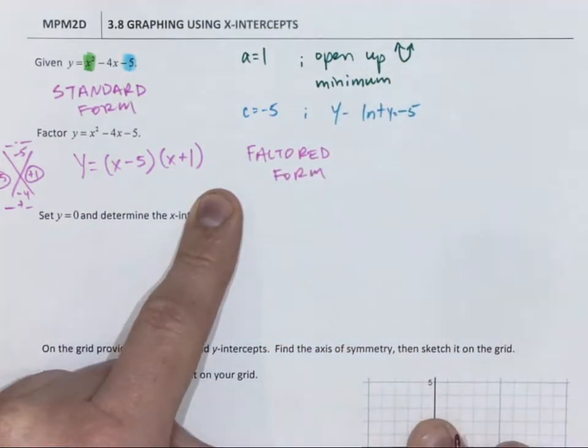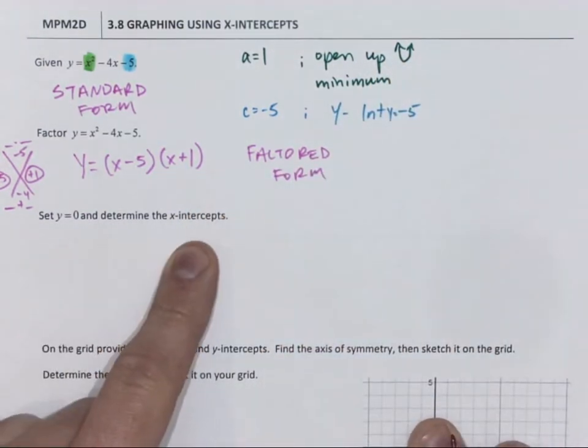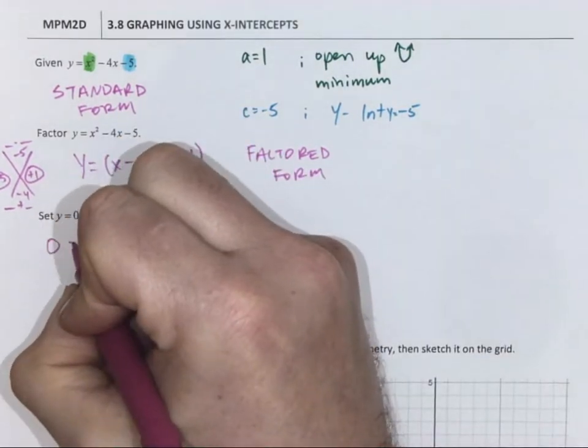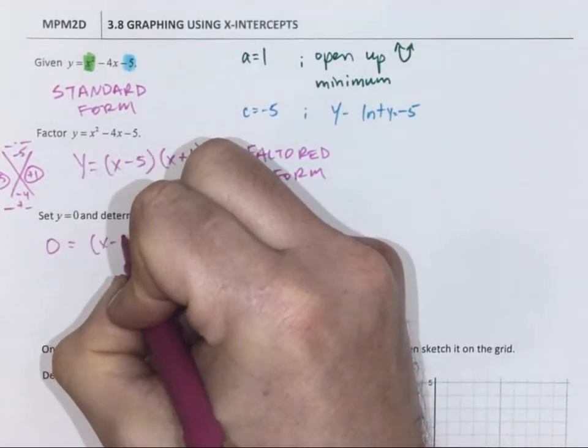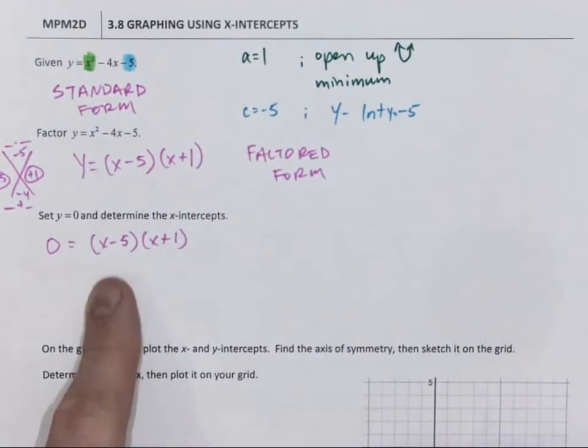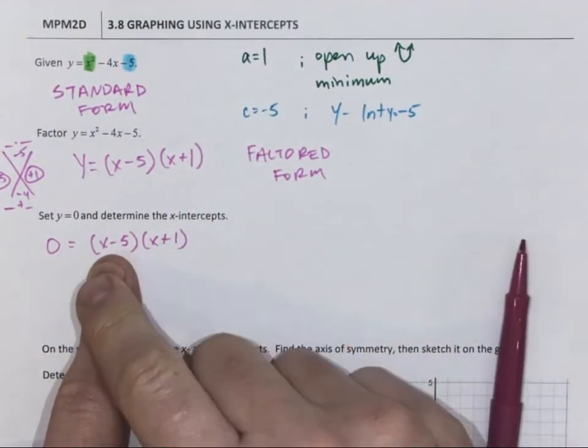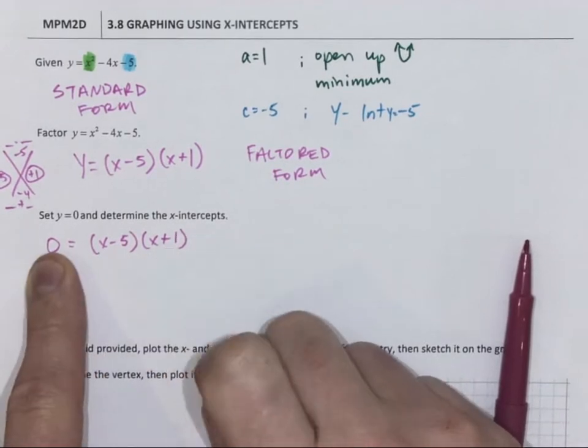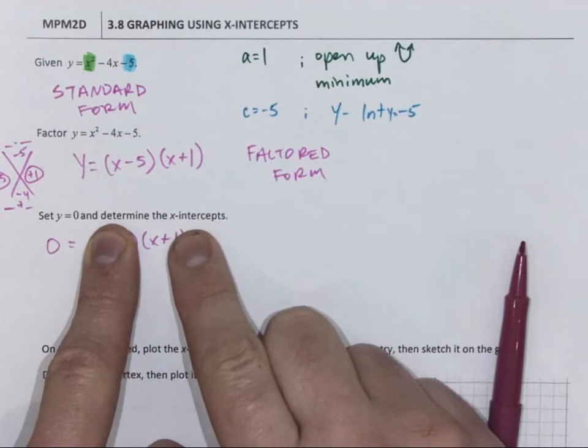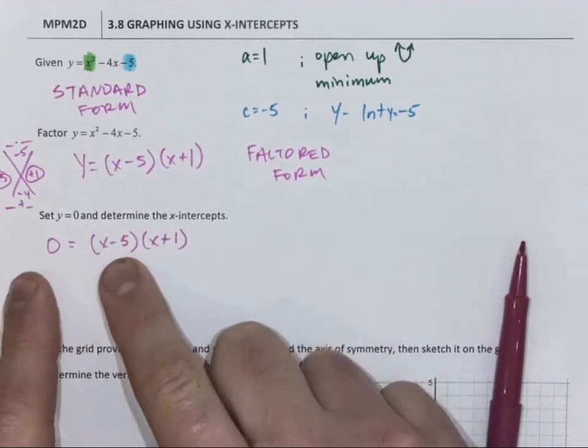And from factored form, we can determine the x-intercepts. So when y is 0, we need to know how we can make the left side equal the right side. And to do that, we need this bracket to be 0, so 0 times a number is equal to 0. We need this bracket to equal 0, so 0 times whatever number that is, is equal to 0.